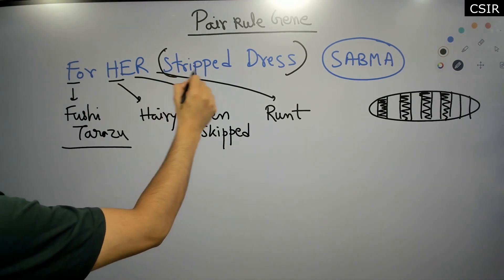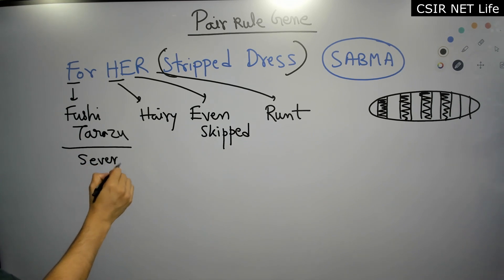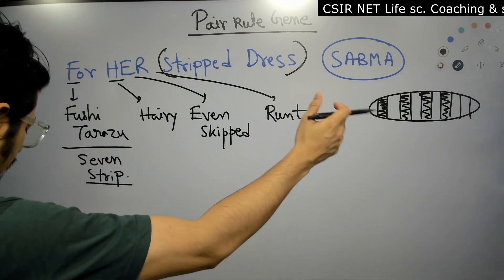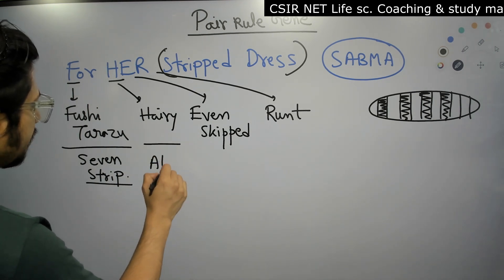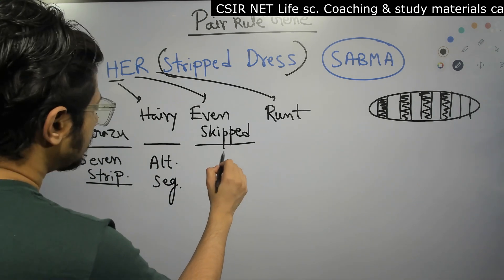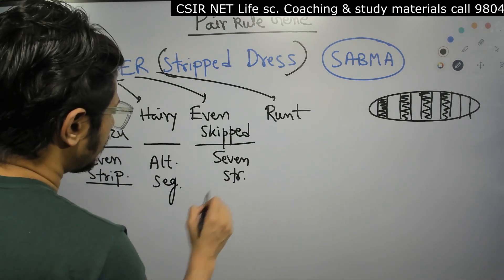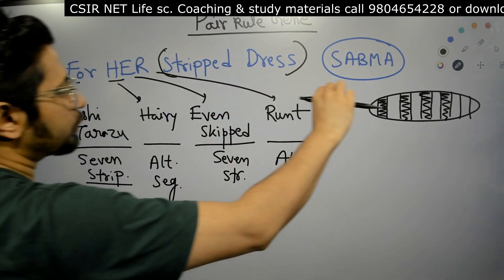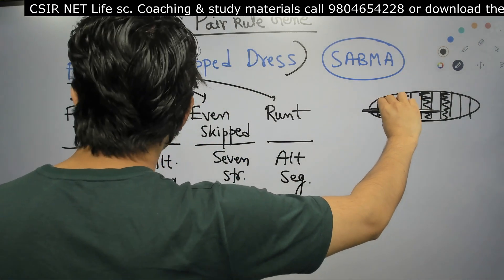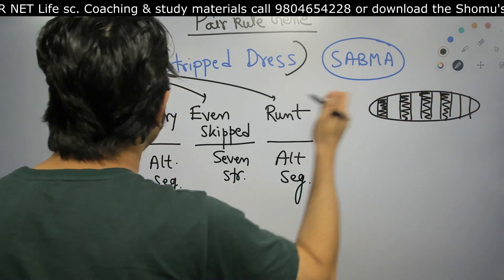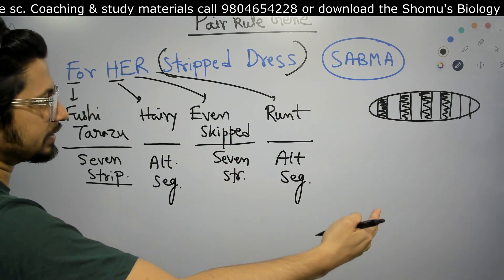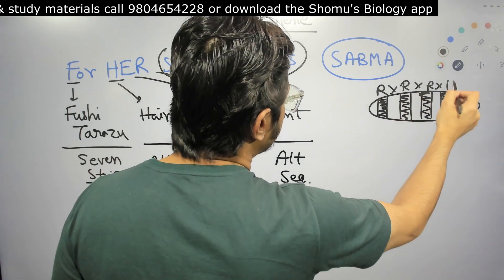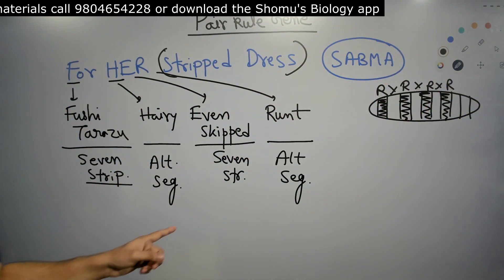Fushi tarazu expresses in a seven-striped pattern — seven different stripes across the body segments. Hairy and Runt, on the other hand, express in the alternative segment pattern. So if Runt is expressing in one segment, it will not express in the next, then it will express in the one after, then not, and so on — alternating through the body segments.